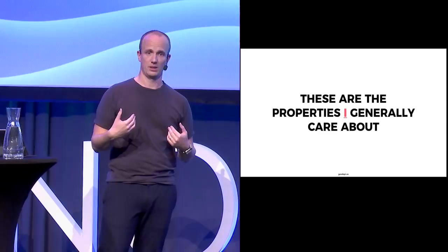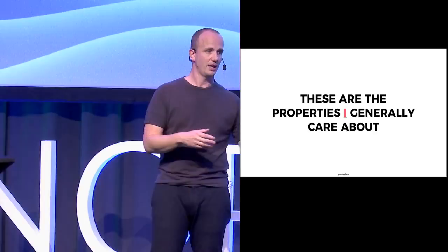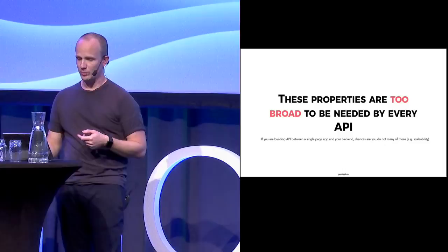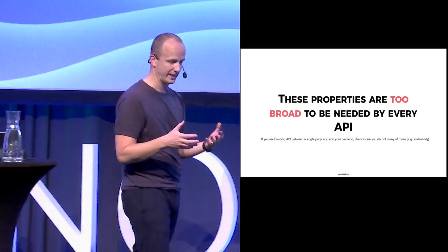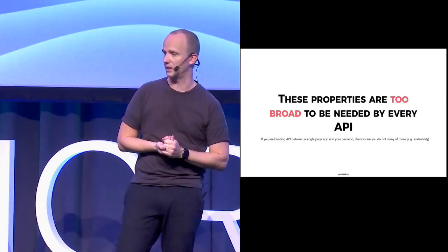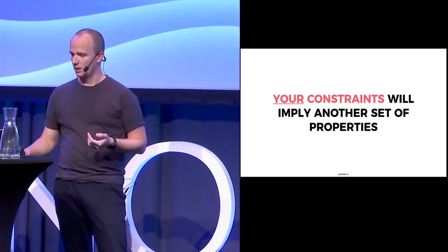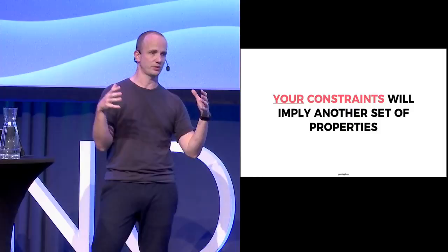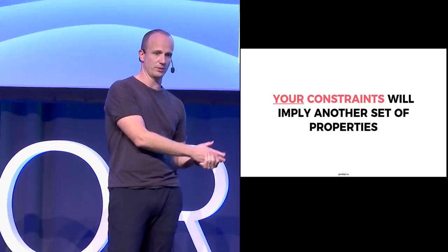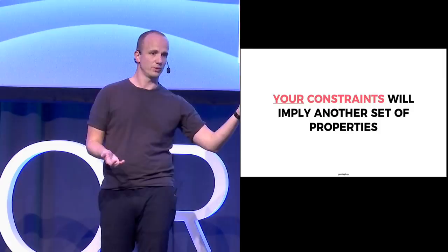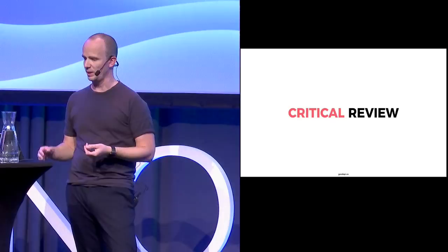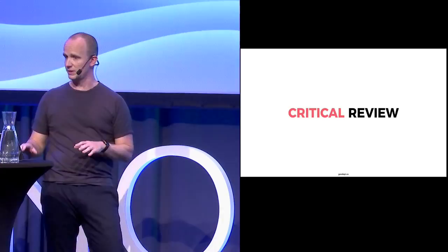These properties are too broad to be needed by every API. If you are building an API that is only here for the next few weeks, you don't need availability or modifiability. Your constraints will result in different properties. We always have to think about what is constraining us. What is my team capable of? If I have only Java developers using a certain framework, is it more important to teach them something different, or do it quickly? Time to market versus other properties — you have to pick based on your constraints.